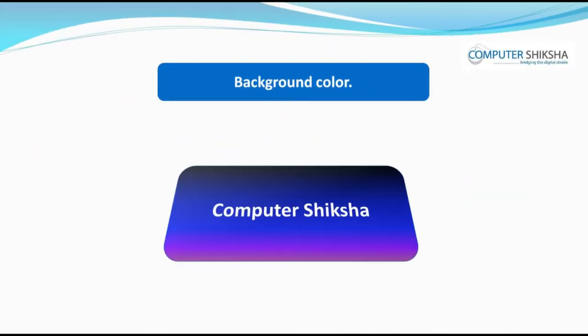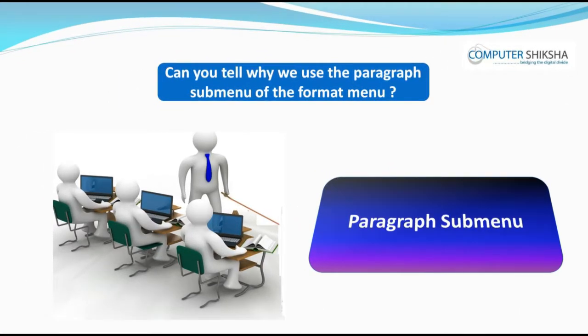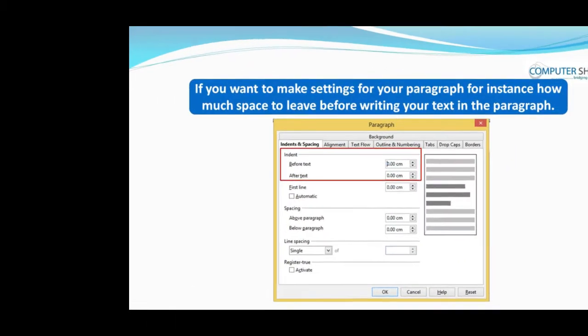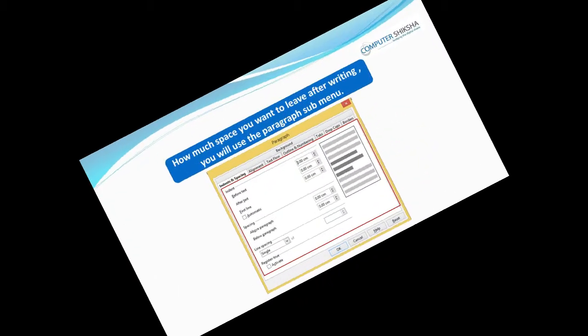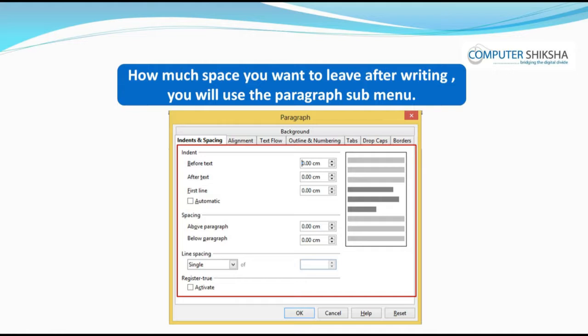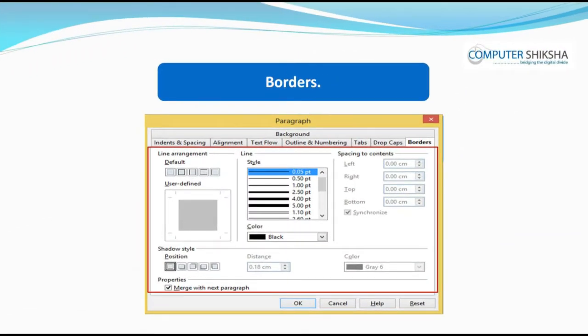Done on your text or paragraph and bring it to its original form. Can you tell why we use the paragraph submenu of the Format Menu? If you want to make settings for your paragraph — for instance, how much space to leave before writing your text in the paragraph and also how much space you want to leave after writing — you will use the paragraph submenu. This will also help you in making the first word of your paragraph bold and in capitals, and also in creating a border on the left, right, top or bottom of the paragraph.